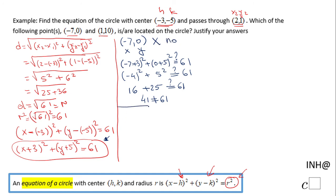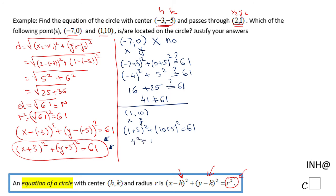Now I'll do the same for the second point, which is 1 and 10. Again, x equals 1 and y equals 10, and we plug into the equation: (1 plus 3) squared plus (10 plus 5) squared equals 61, question mark. That gives us 4 squared plus 15 squared equals 61, which is 16 plus 225. Since that does not equal 61, this point is also not on the circle.